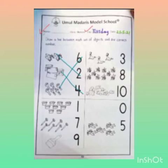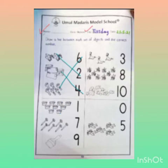Second group की तरफ आते हैं। यह क्या है? These are crowns. Let's count: one, two, three, four, five, six, seven, eight, and nine — nine crowns. तो हम nine crowns को nine number के साथ match कर देंगे।